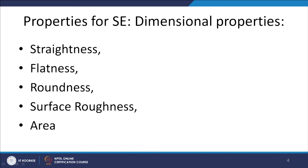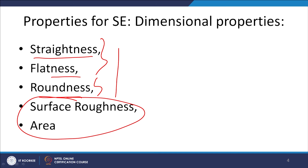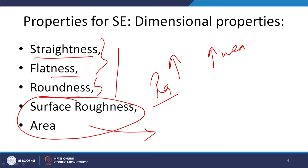Now we will take up the dimensional properties and try to relate them with the resistance to wear. Straightness and flatness are important to have smooth movement of the component during service. Similarly, the roundness of the component — these are the dimensional properties of the component which are produced by various manufacturing processes and then characterised. Probably the two most important properties that affect the way by which material loss takes place are the surface roughness (Ra) and the surface area. In general, greater the surface roughness, higher will be the wear rate, especially under abrasion and adhesion conditions.